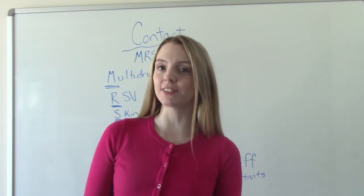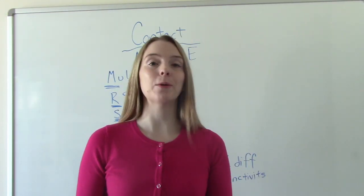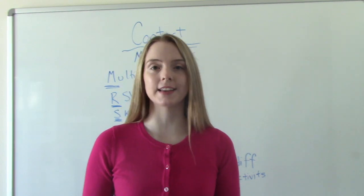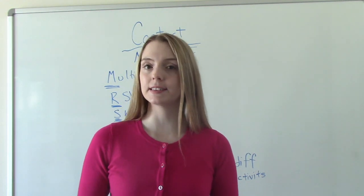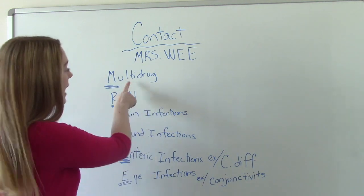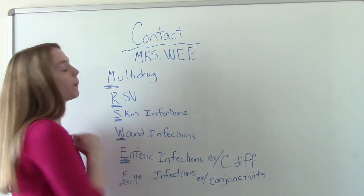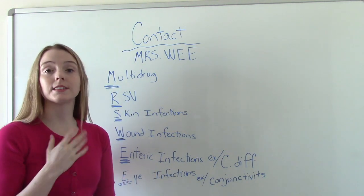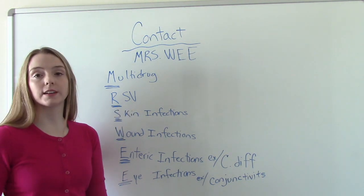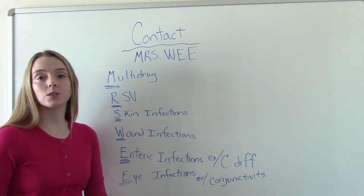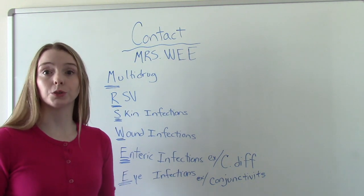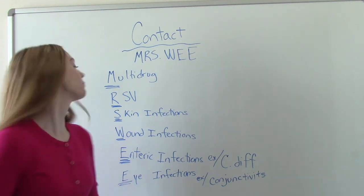We have a mnemonic device to help us remember all the different reasons why somebody would be on contact isolation, and that is MRS WE. The M is for multi-drug resistant organisms. R is for RSV, a respiratory virus that happens usually in little children and babies, usually in the wintertime.